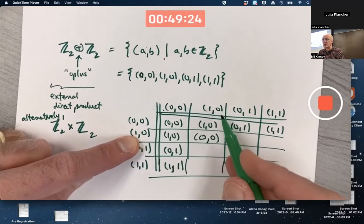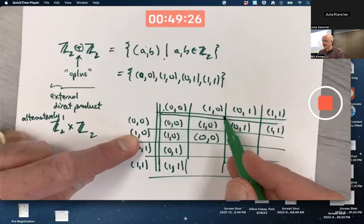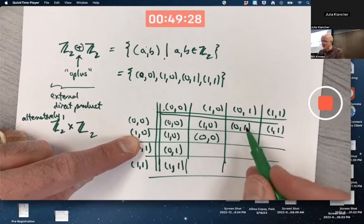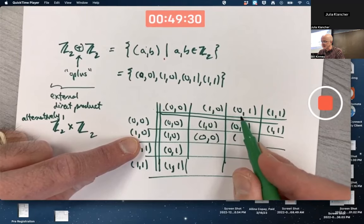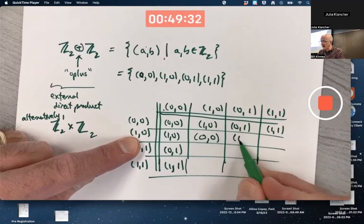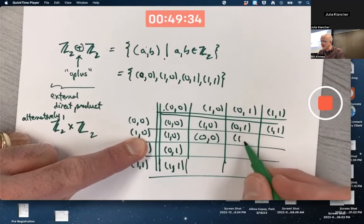(1,0) has order 2. What's (1,0) plus (0,1)? For the first component, do 1 plus 0 to get 1. For the second component, do 0 plus 1 to get 1.